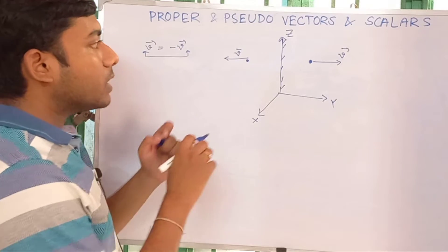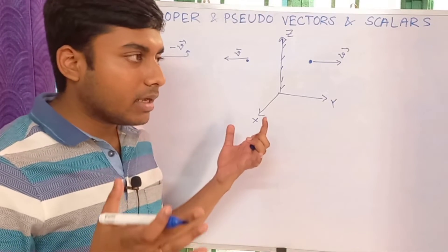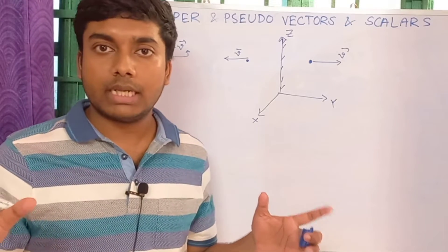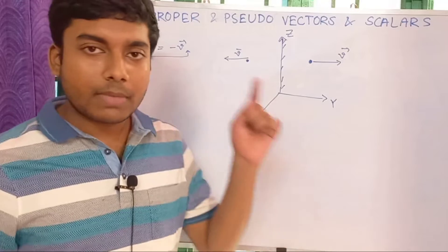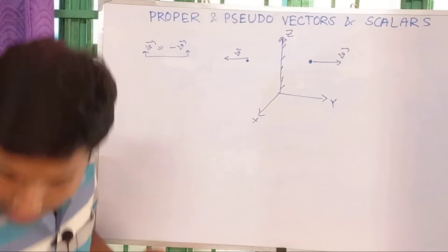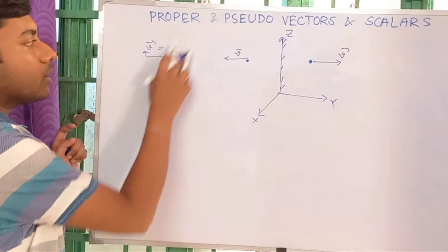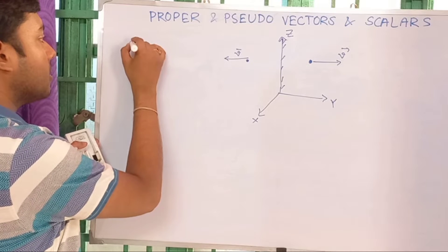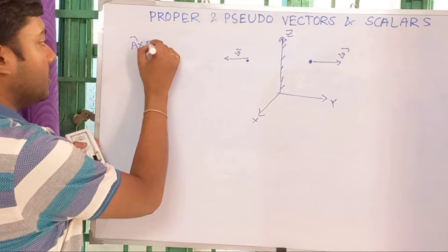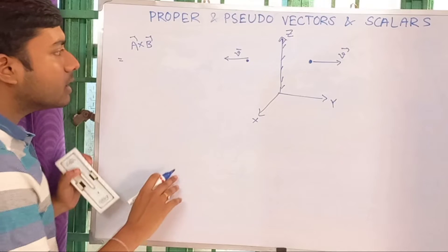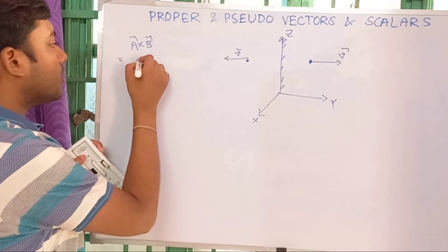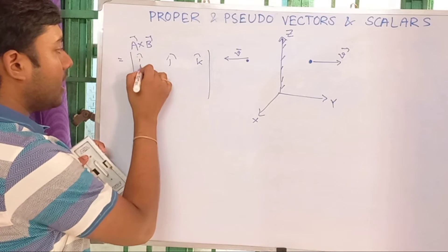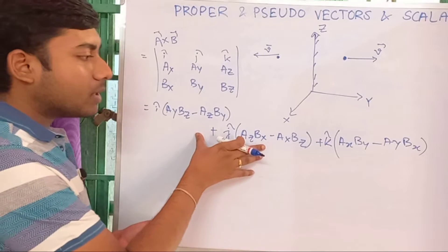Now you might think it is obvious and will happen with every type of vector, but that is not true. Let us understand the cross product of two vectors. Suppose we have A cross B. The cross product determinant looks like: I, J, K in the first row, then Ax, Ay in the second row.